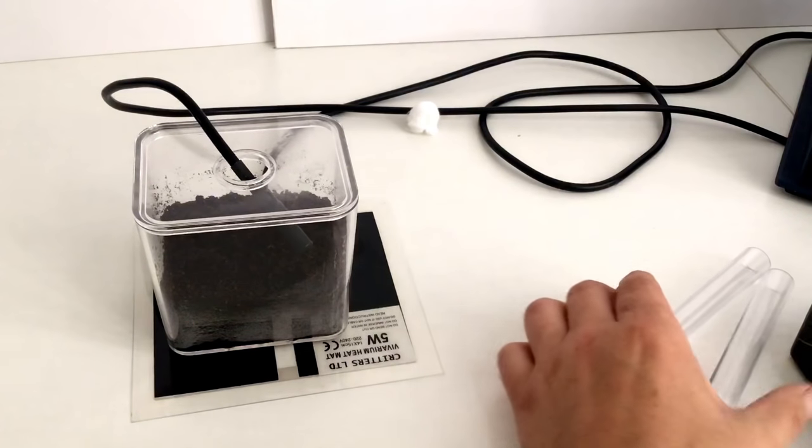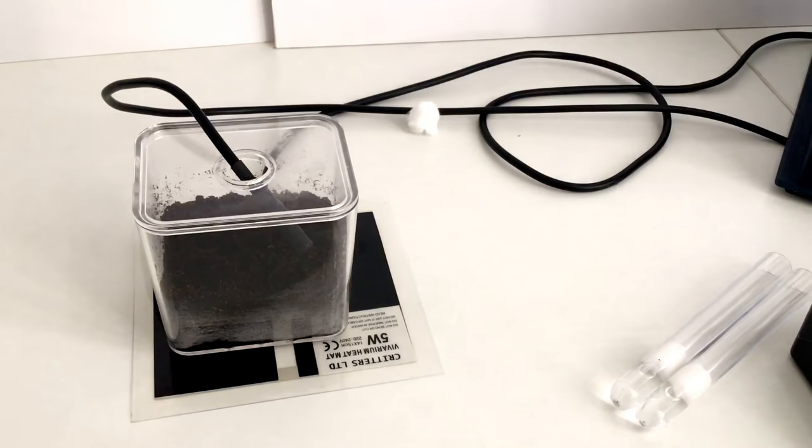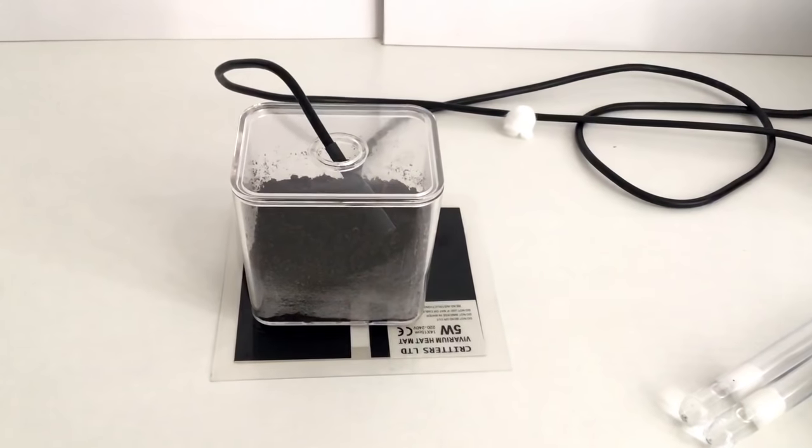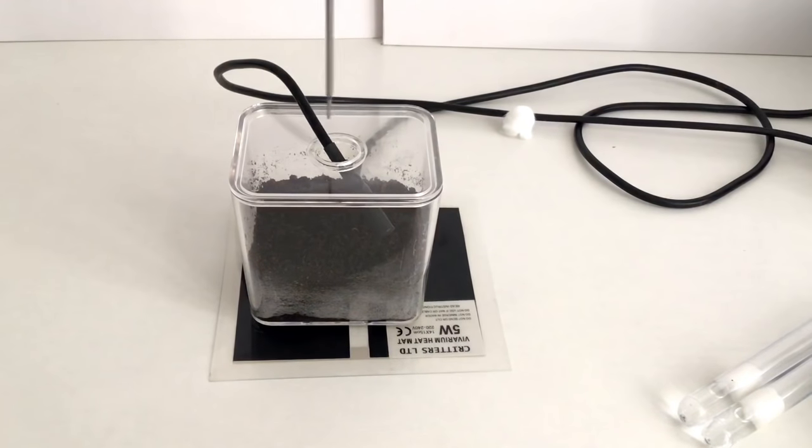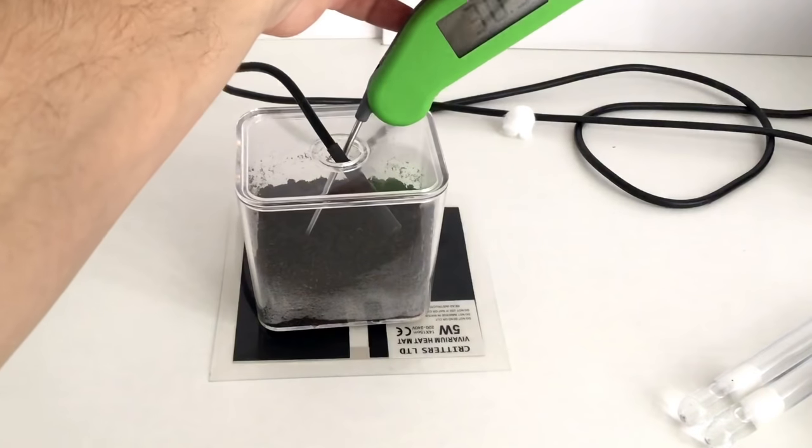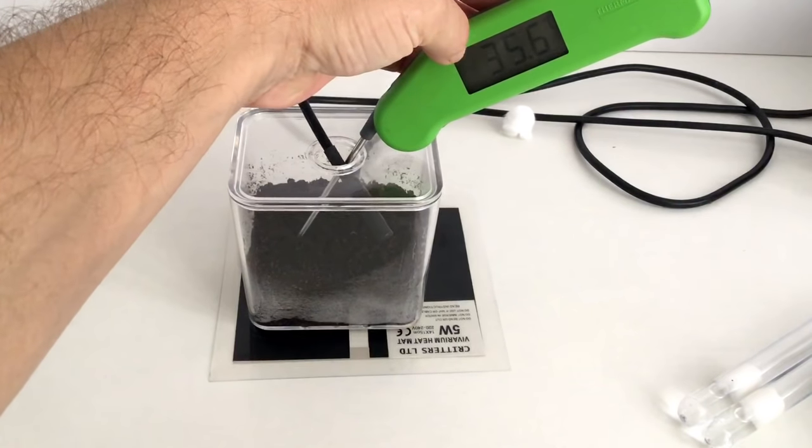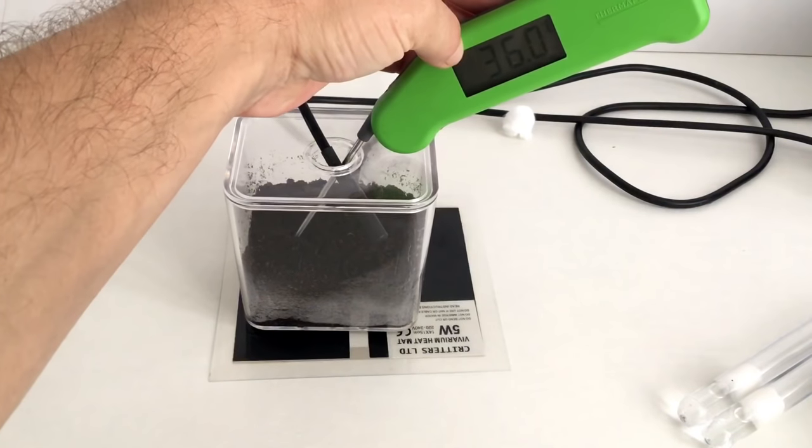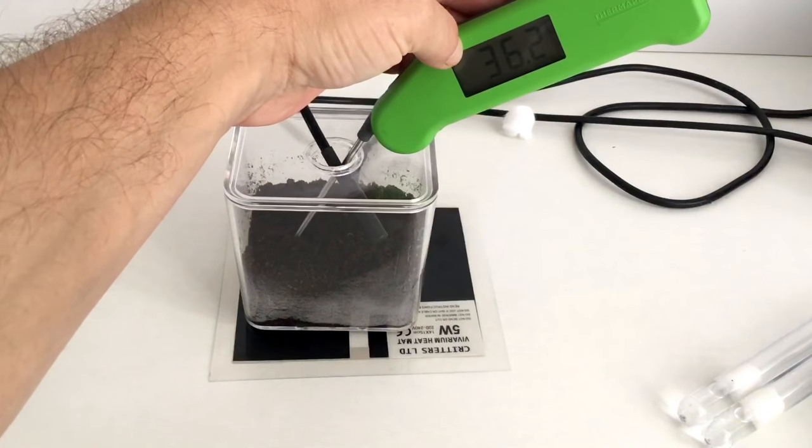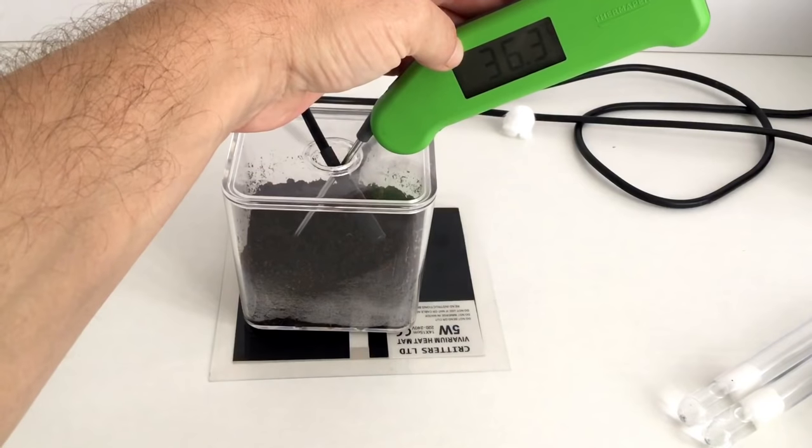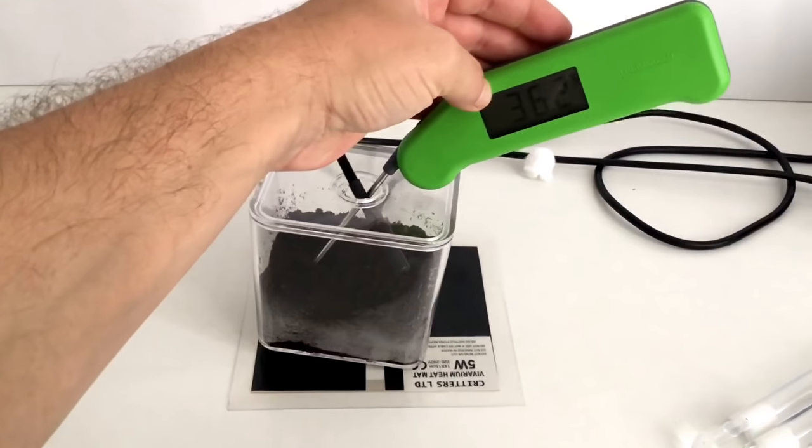Now this one, this heat mat, we have set up on the thermostat. The thermostat is set at 28 degrees. And let's see what that's coming up with. So the probe is touching the bottom of the unit. And taking a measurement of 36.3.